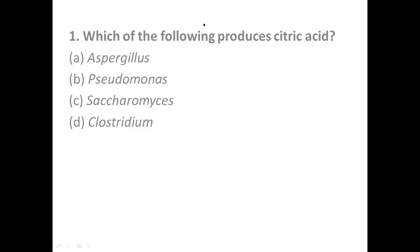Question number one: which organism produces citric acid? Options are: (a) Aspergillus, (b) Pseudomonas, (c) Saccharomyces, and (d) Clostridium. The correct answer is option (a) Aspergillus. Aspergillus niger is actually a fungus; another microorganism which produces citric acid is a species of Candida. Citric acid is produced in the TCA cycle.